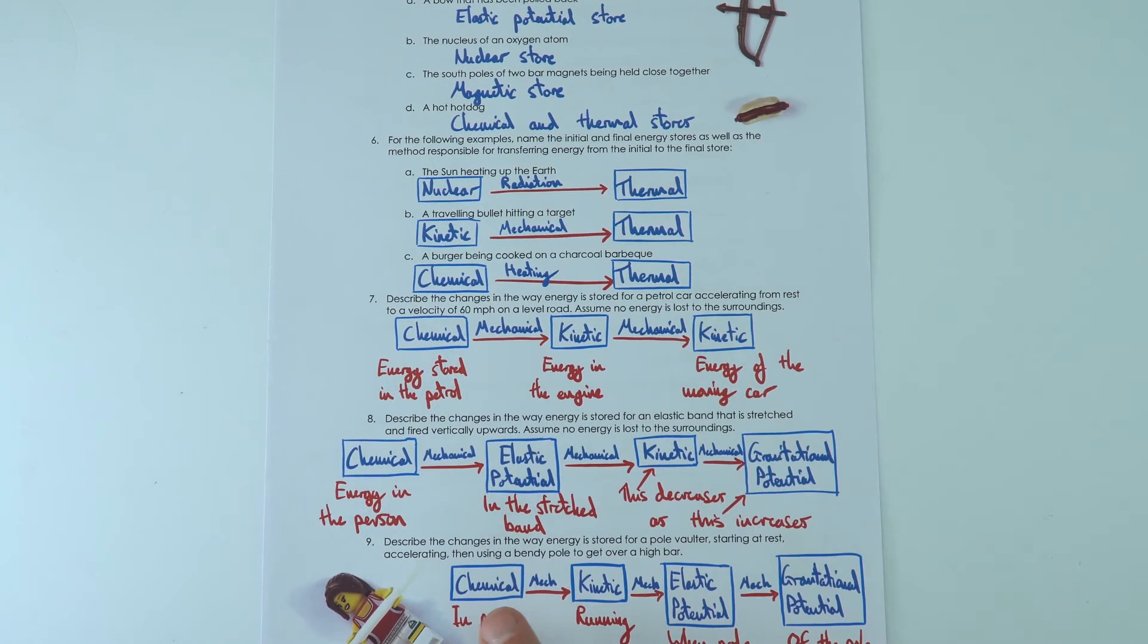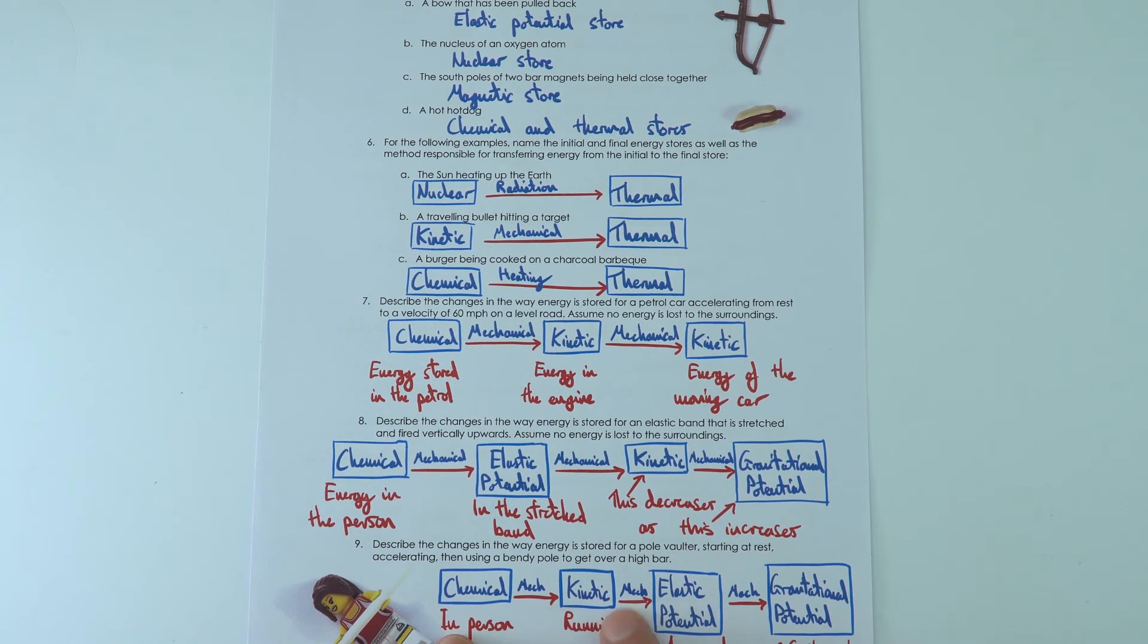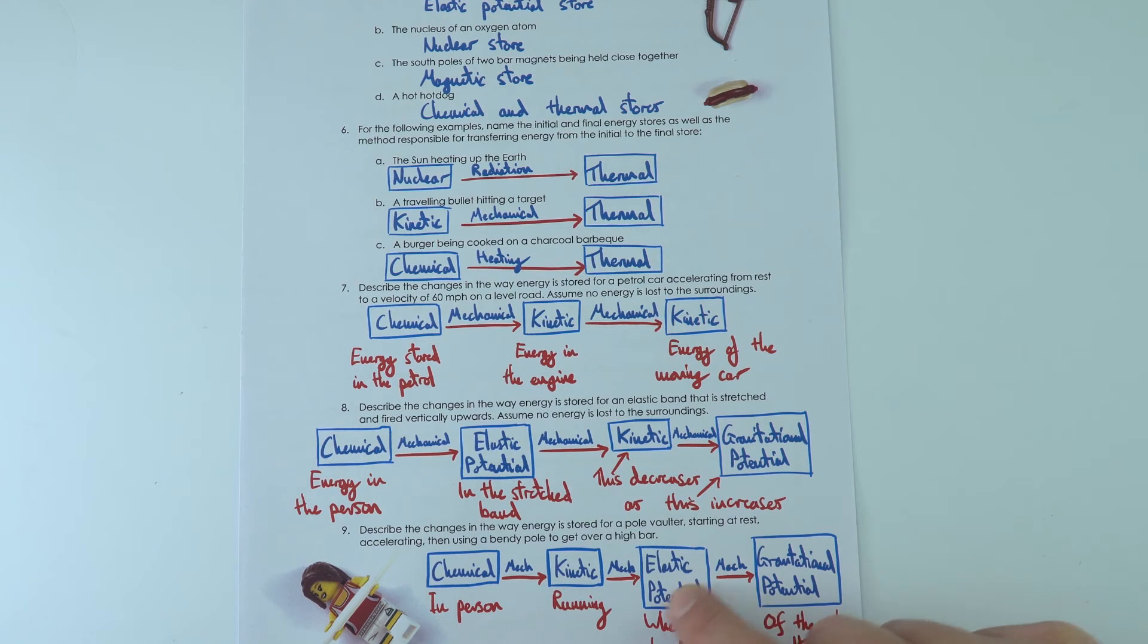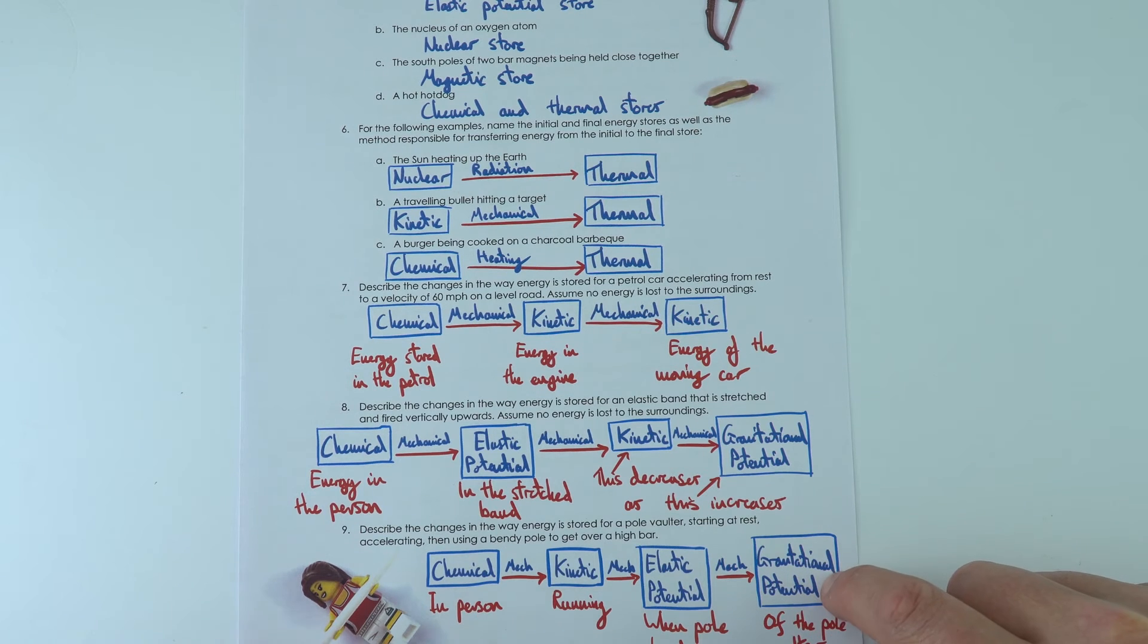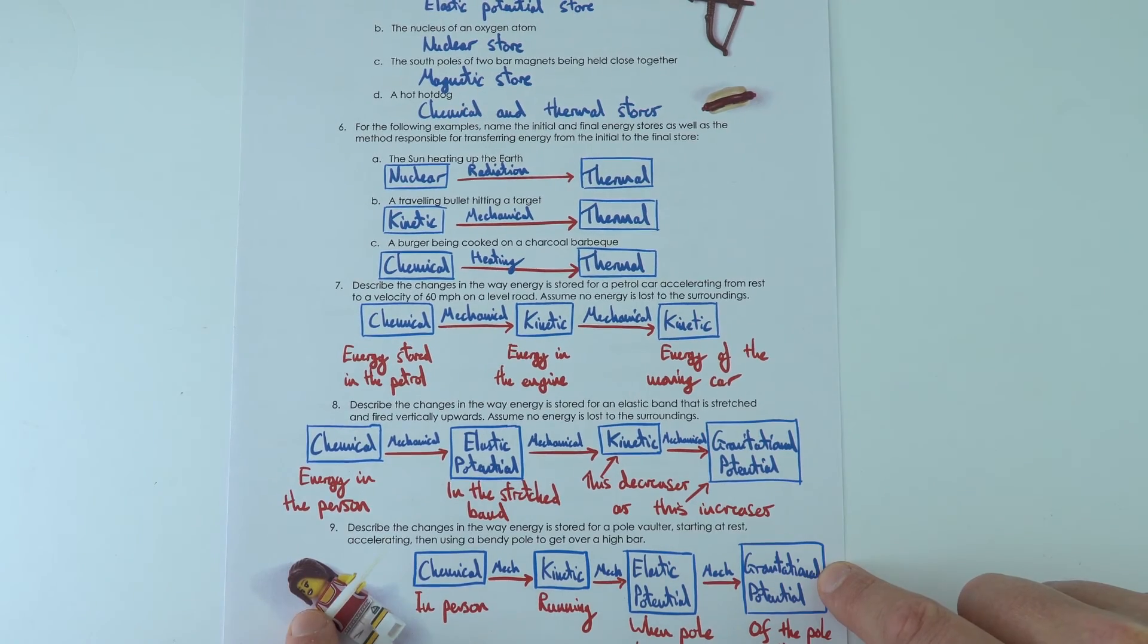And then finally, we've got a pole vaulter. So they've got chemical energy inside them, their muscles are doing work, they're increasing their speeds when they're running, and then eventually, the pole that they're holding, that bends, it stores a load of elastic potential energy, which is then transferred, again by a force, into the increased gravitational potential energy of the athlete as they go over the pole.